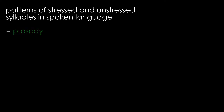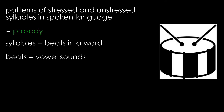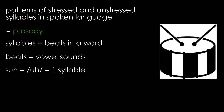Rhythm relates to the patterns of stressed and unstressed syllables in spoken language. Another word for this is prosody. Syllables are often thought of as the different beats in a word. The different beats that you hear actually correspond to the number of different vowel sounds in words. For example, the word 'sun' has one vowel sound — a short u.